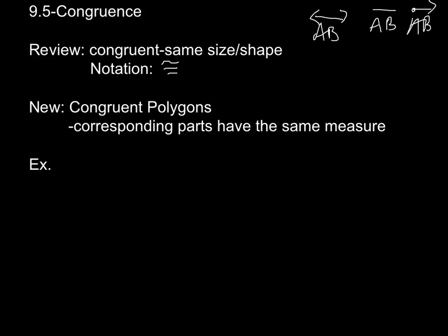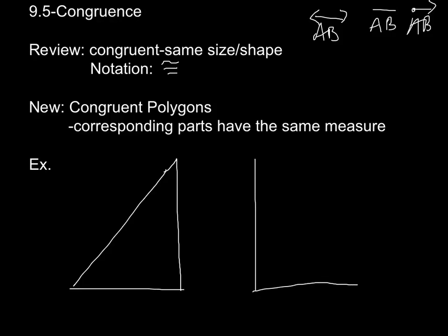That was kind of a review. New is congruent polygons. That means the corresponding parts — basically the same parts of the triangle are equal to each other. An example of that would be if we had triangle ABC and another triangle DEF.